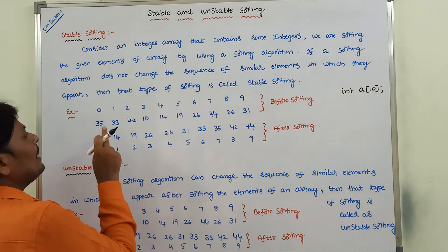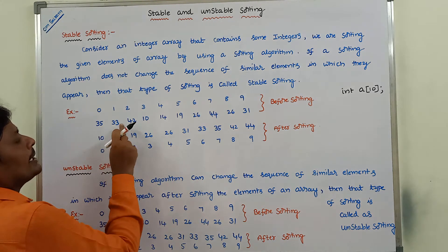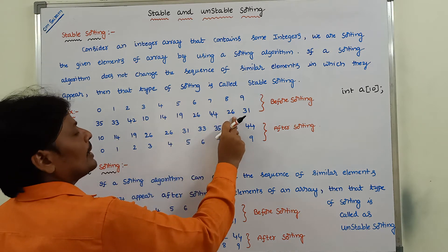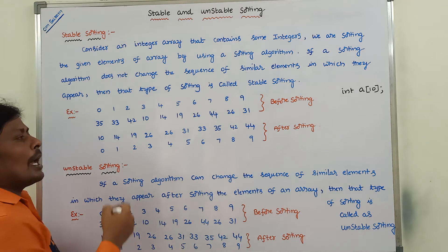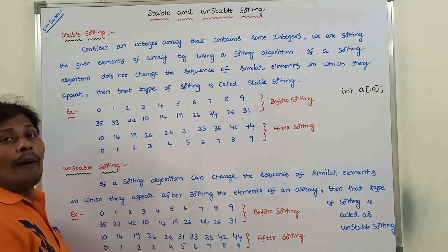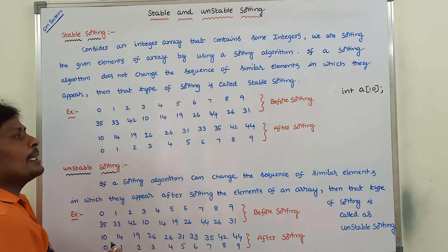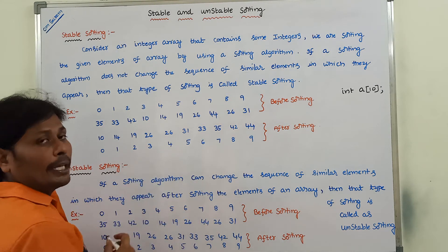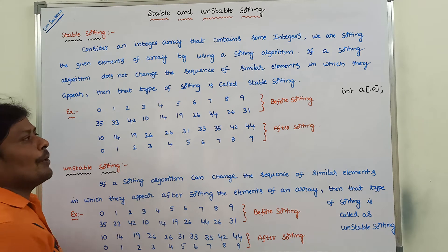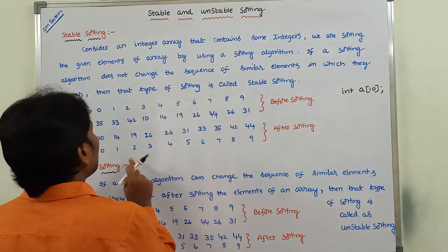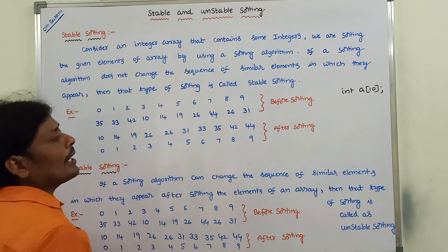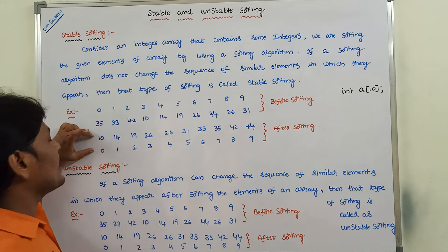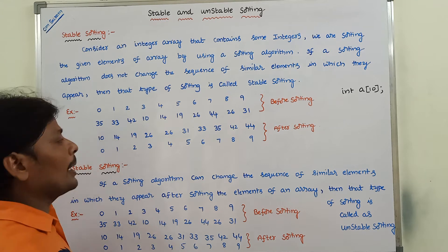The 10 elements of the given integer array are indexed from 0 to 9. The elements are 35, 33, 42, 10, 14, 19, 26, 44, 26, 31. By using a sorting algorithm we can sort all the elements. This shows the array before sorting and after sorting.